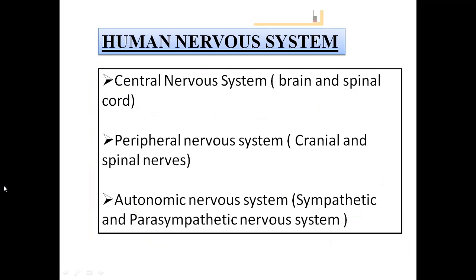Next is our human nervous system. The human nervous system is mainly divided into three parts: the central nervous system, the peripheral nervous system, and the autonomic nervous system. The central nervous system is mainly comprised of the brain and the spinal cord. The peripheral nervous system is mainly comprised of the cranial and spinal nerves. The autonomic nervous system is mainly comprised of the sympathetic and parasympathetic nervous system.